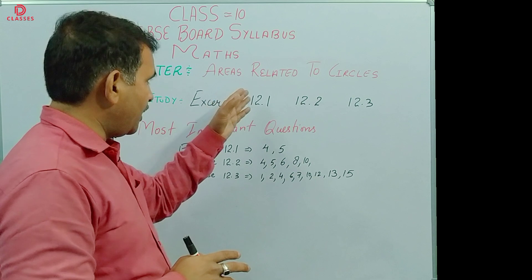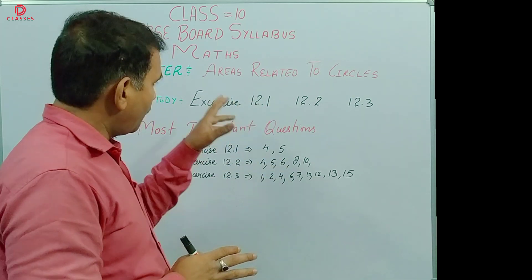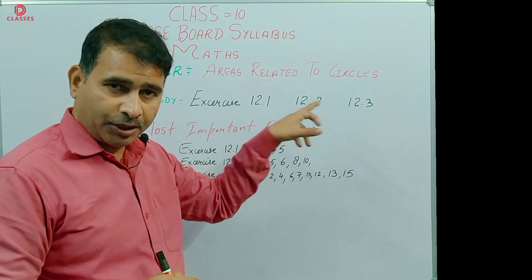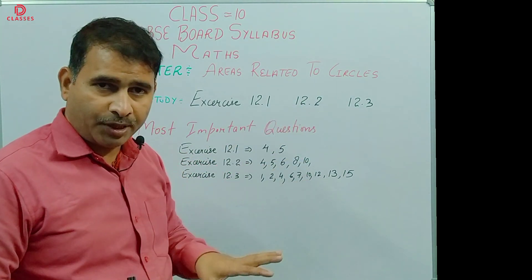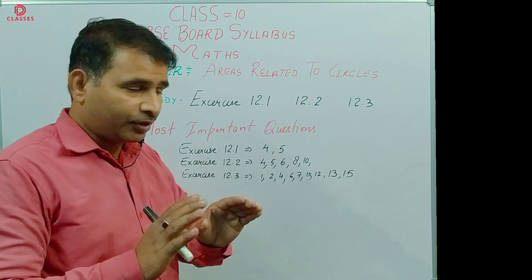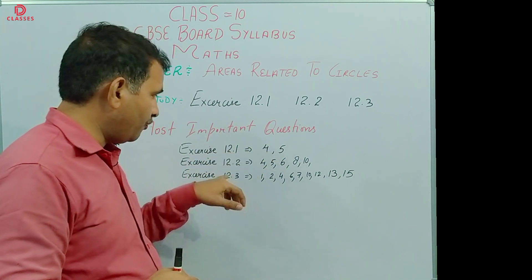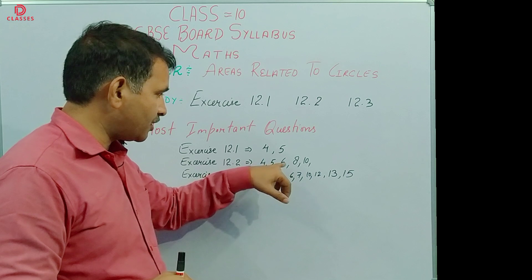The chapter is Areas Related to Circles. Exercises 12.1, 12.2, 12.3 - all the content you have to study, nothing is deleted from here. Now, the most important questions: Exercise 12.1 questions 4, 8, 5. Exercise 12.2 questions 4, 5, 6, 8, 10.